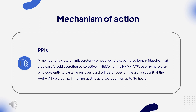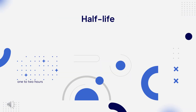The delivery technology of Dexlansoprazole MR is designed to release the drug in two separate pH-dependent phases: the first in the proximal duodenum (25% of total drug dose), and the second (75% of total drug dose) in the more distal small intestine. Dexlansoprazole reduces both basal and stimulated gastric acid secretion.